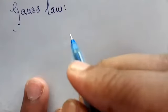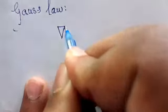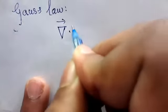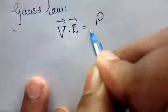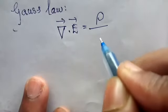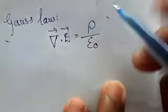Now write the differential form of Gauss's law. What is the differential form of Gauss's law? The divergence operator dot E vector is equal to charge density ρ divided by epsilon naught. This is Gauss's law in electricity.